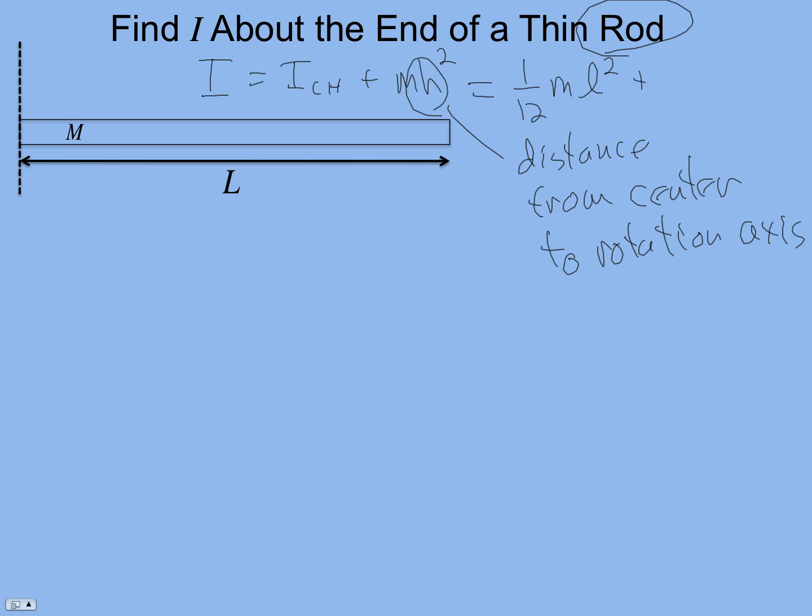But in this case, if we want to figure out the rotational inertia about the end of a rod, h would be the distance from the center to the rotation axis or L over 2. So you might go through and do that and show that it comes out to be 1/3 mL squared.